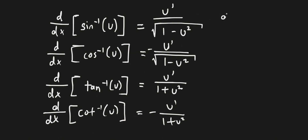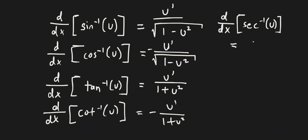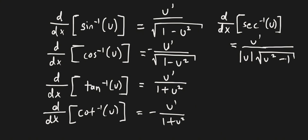Let's look at the last two — these are probably the hardest. The derivative of secant inverse of u is going to be equal to u prime on top, all over the absolute value of u times the square root of u squared minus 1. Just remember this absolute value.